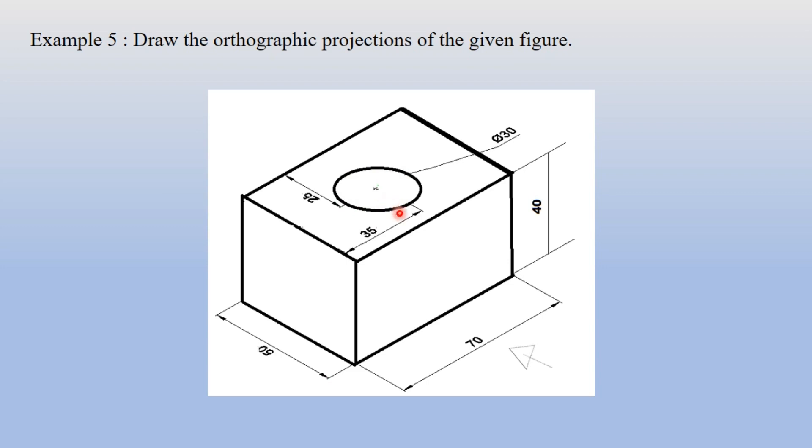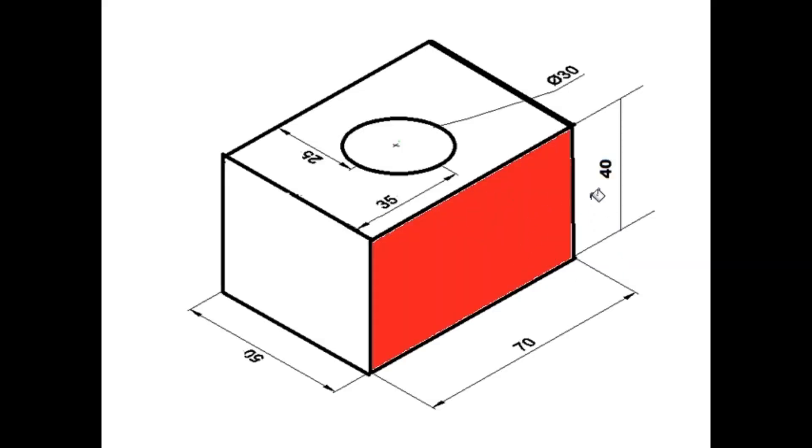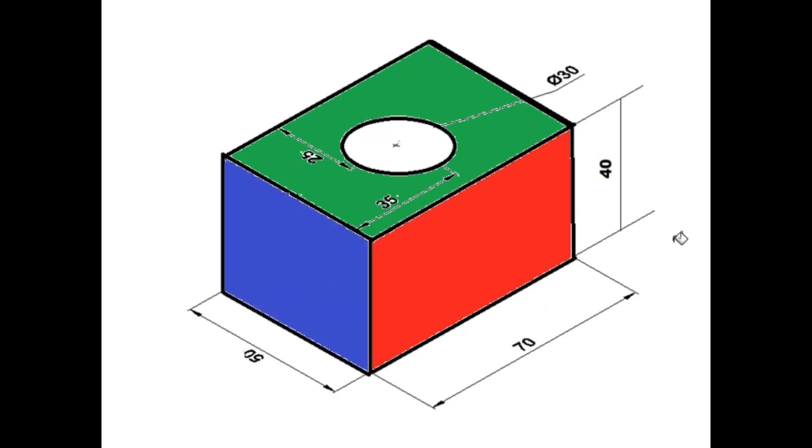First we will see the front view, top view, and side view. This red color portion will appear in the front view. And in the top view I am going to paint this with green color, but excluding this hole because there is a hole. And this blue color portion will appear in the left hand side view. So you need to be careful about this hole which is not visible. And due to this hole only you will get some hidden lines in the front view and in the left hand side view.